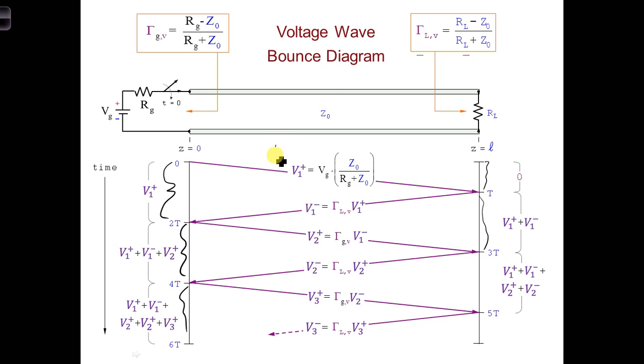You could do the same thing at any point in the middle of the transmission line if you wanted to. You would see 0 until this point along this particular Z position until you see the V1+ line. And then it would stay V1+ until here you would also add on to that V1-. And at this point in time, you would add on V2+, and so forth.